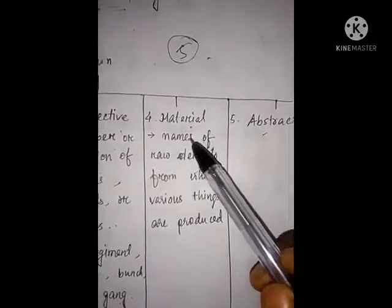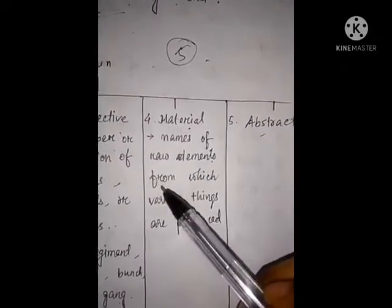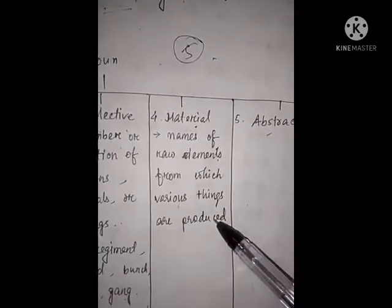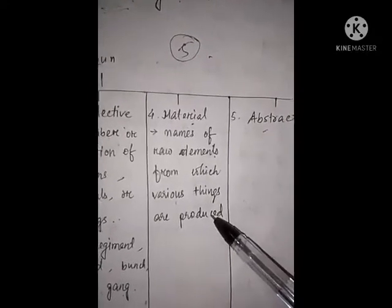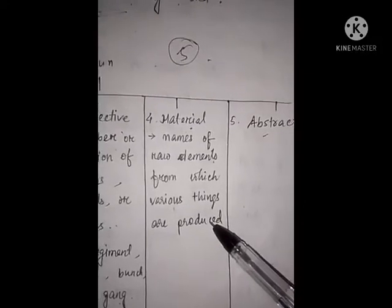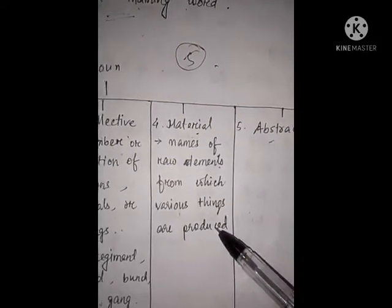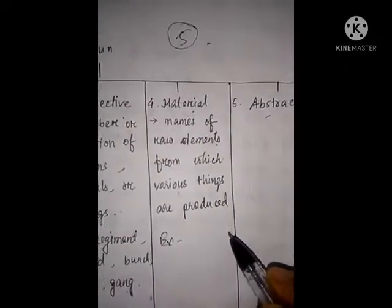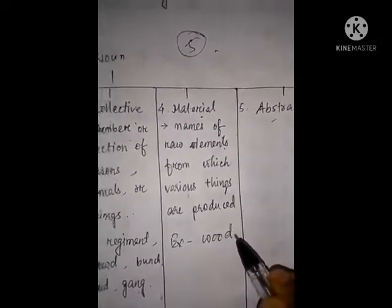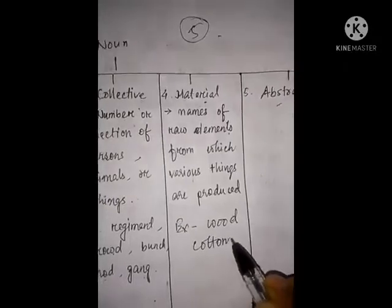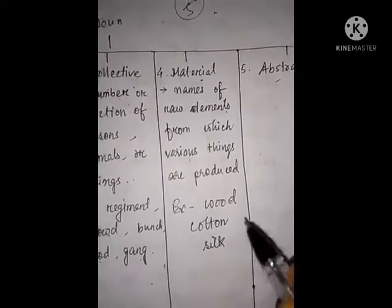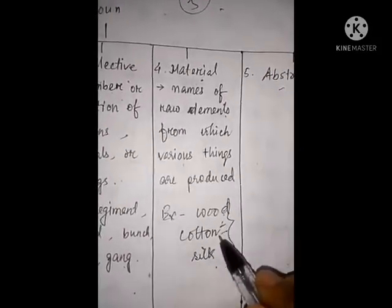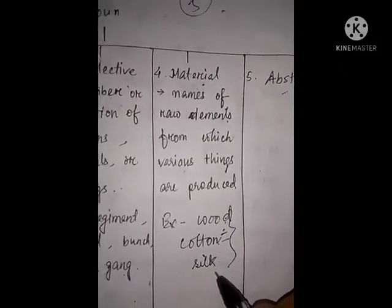Now see material noun. Names of natural raw elements from which various things are produced — they are material nouns. For example, some raw materials: wood, cotton, silk. These are some natural raw materials from which various things are produced. So these are the material nouns.